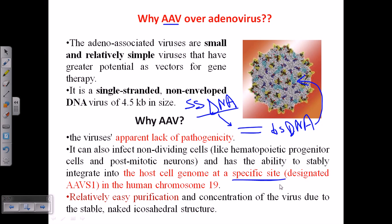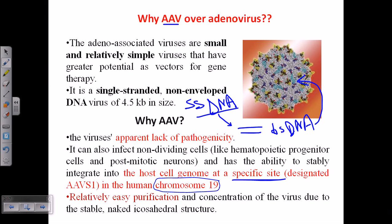AAV can insert its DNA into the host genome at a specific site — specifically chromosome 19. So if there is any abnormality on chromosome 19, we can insert a pure copy of our gene there using AAV. It is also relatively easy to purify, and the concentration of viral particles can be high. The three major reasons for choosing AAV are: apparent lack of pathogenicity, specific incorporation at chromosome 19, and relative ease of purification.